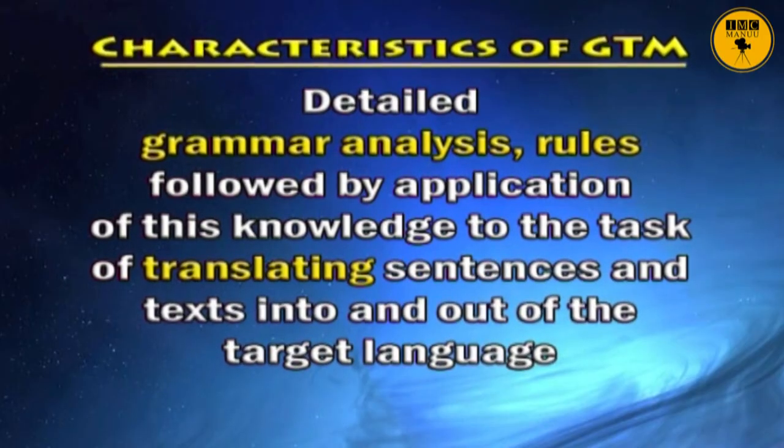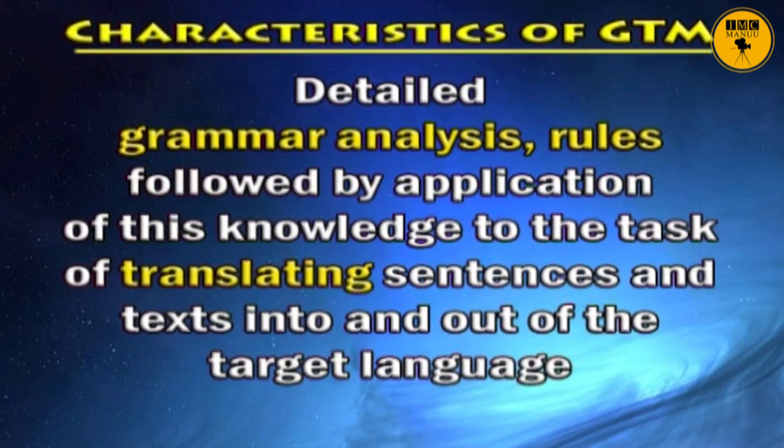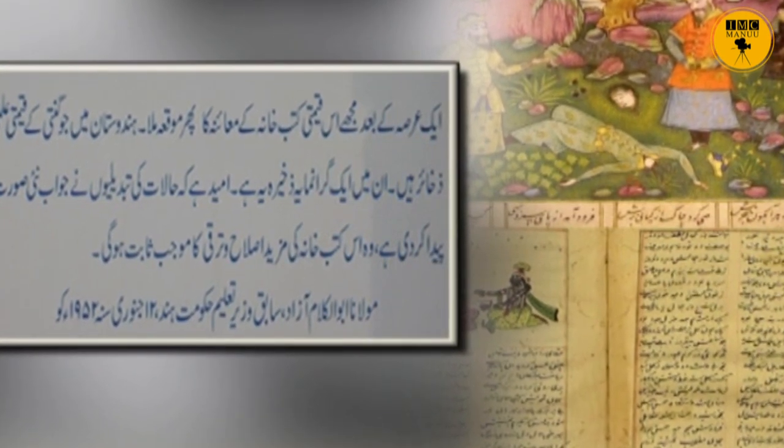What are the characteristics of GTM? First: detailed grammar analysis rules followed by application of this knowledge to the task of translating sentences and text into and out of the target language. Here, target language means the language you are learning — for example, if Urdu is your mother tongue, English would be your target language. The first language is maintained as the reference system in the acquisition of the second language, as noted by Stern in 1983.